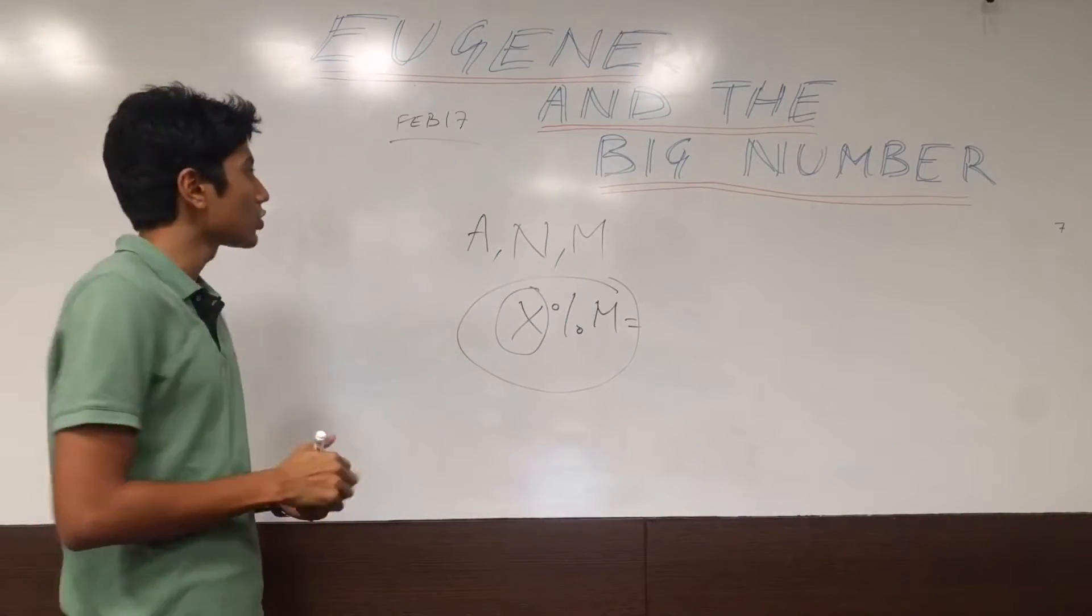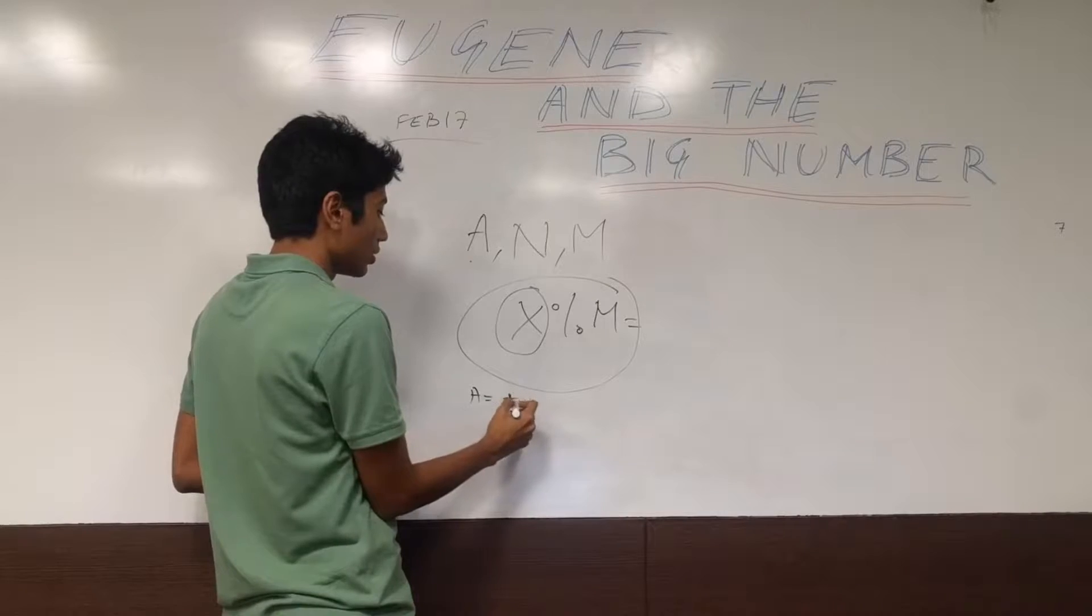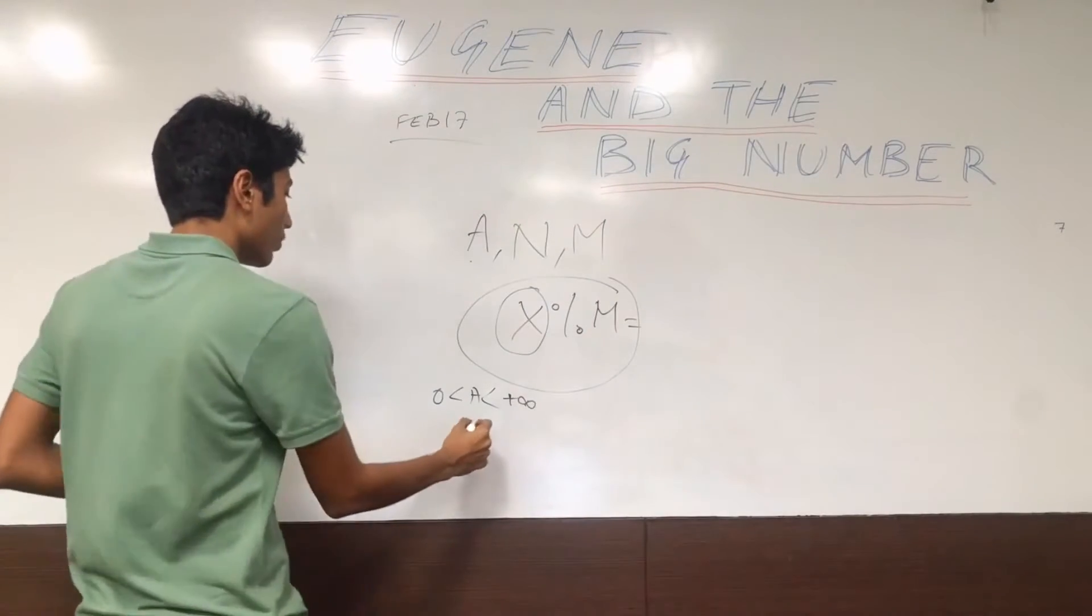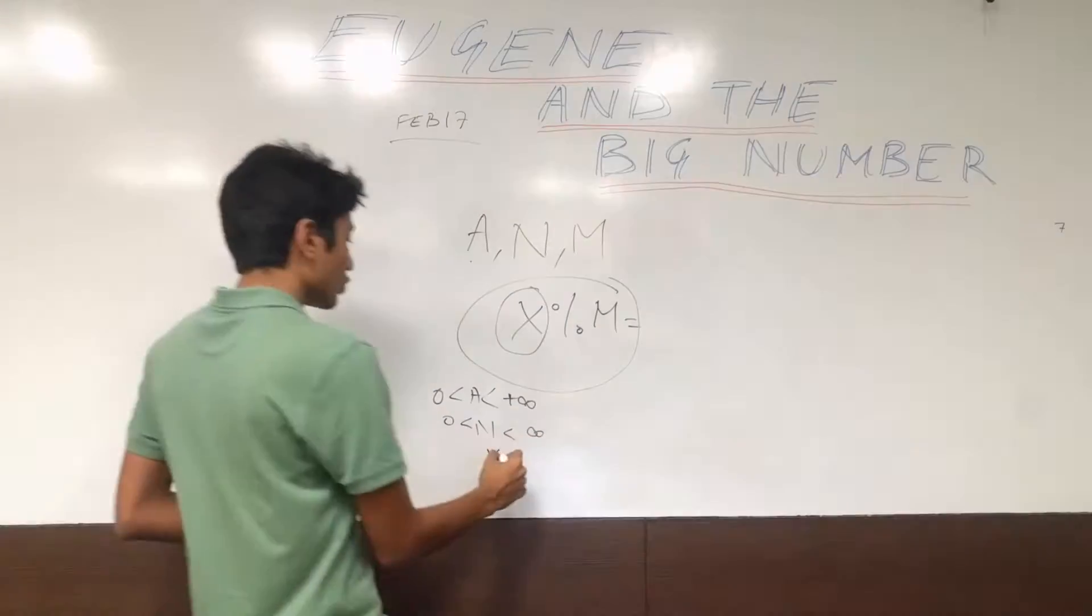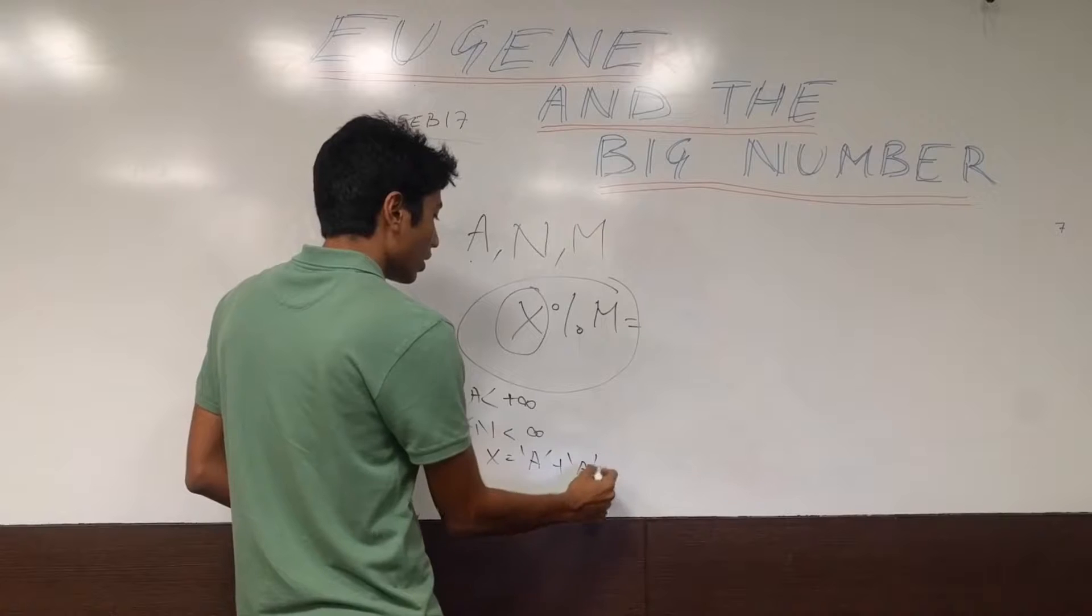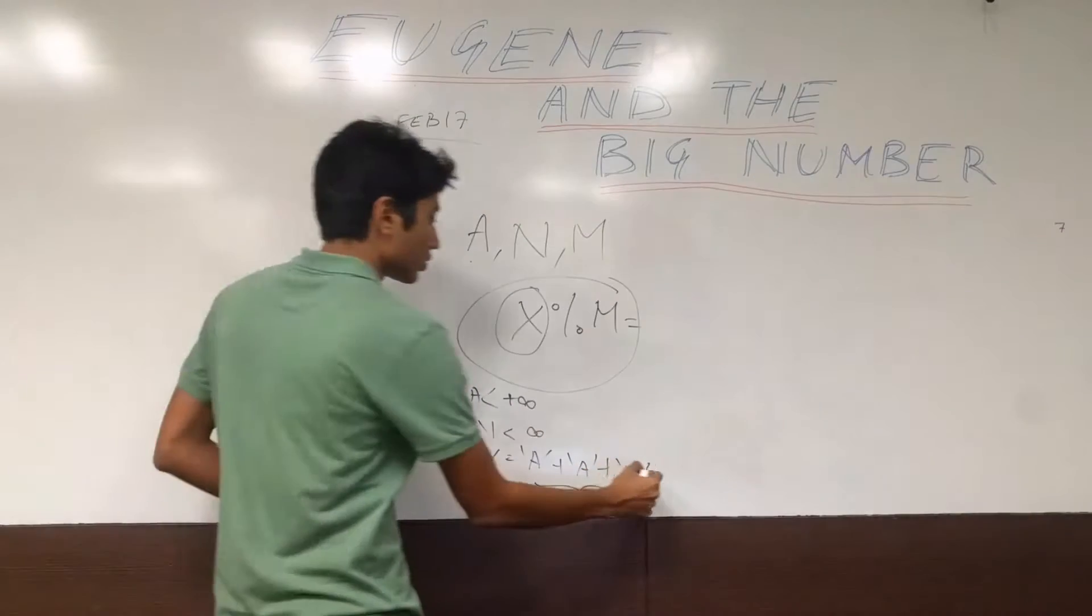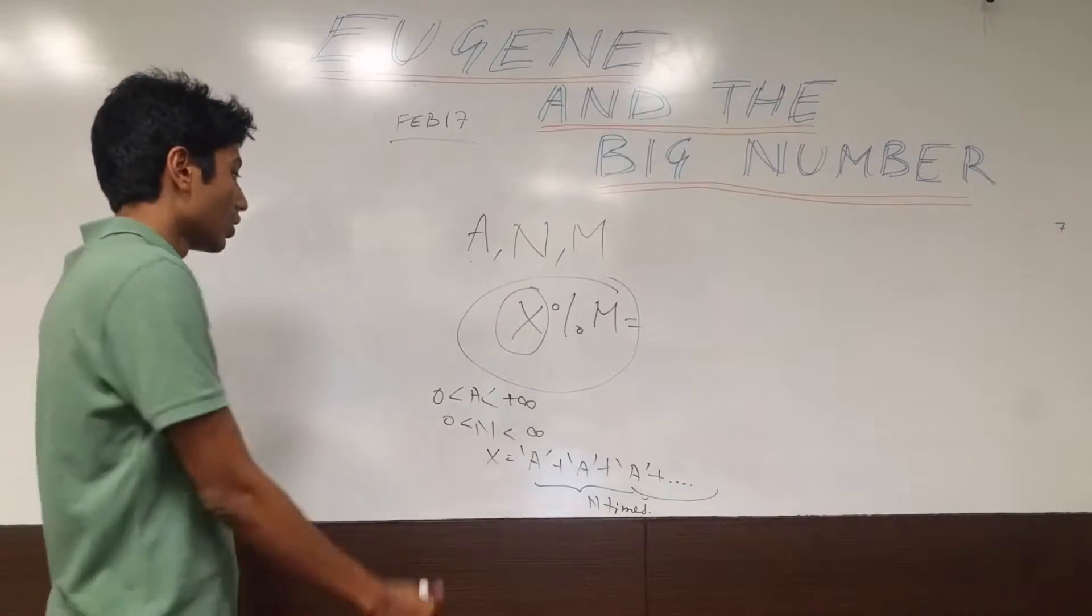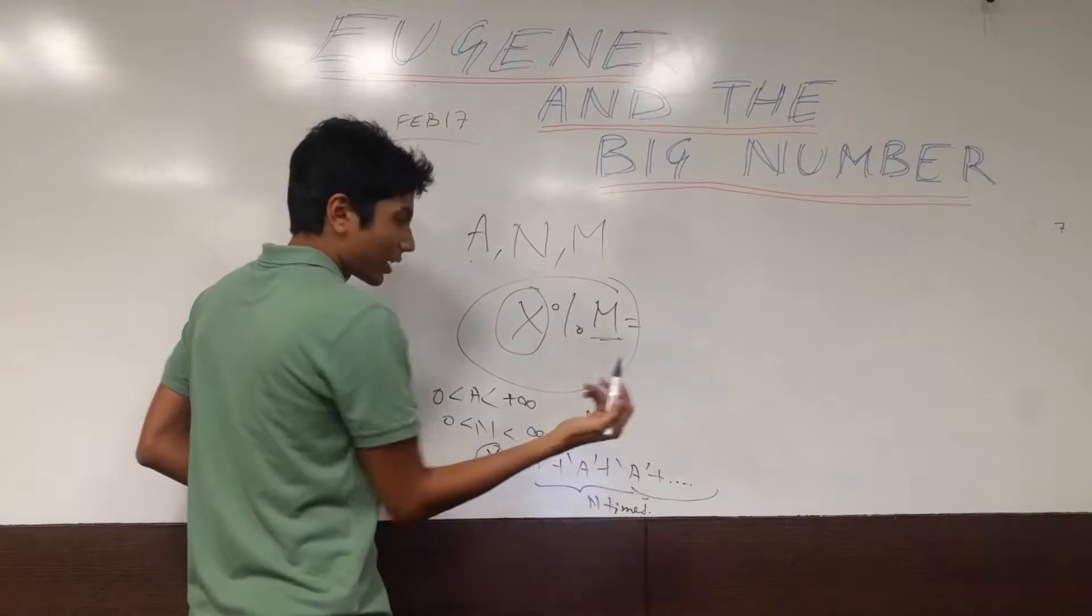A formal definition of this problem is a is a number, any positive integer between 0 to infinity. n is another number between 0 to infinity. x is a number which is defined like this. You take a as a string, and you append a to it again and again n times. This will give you a string x which is actually a number. So you take this number then and you modulo it with m. m is again another integer.